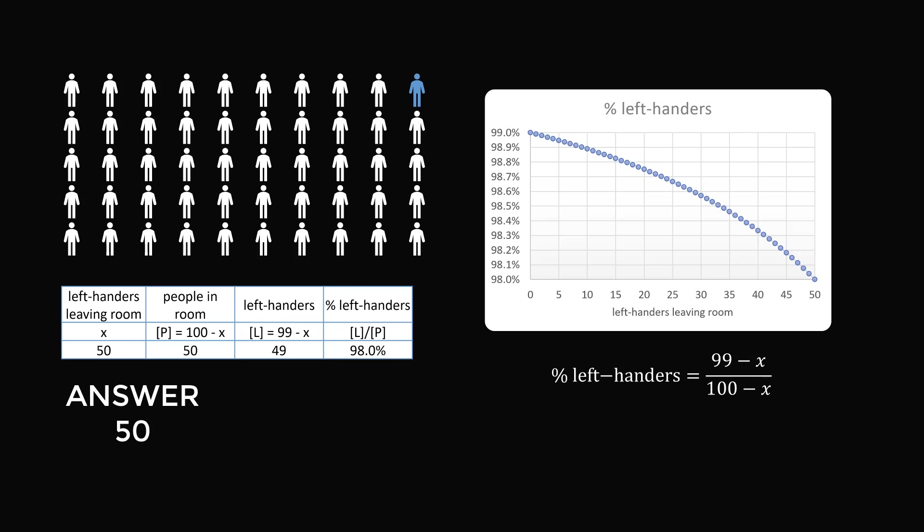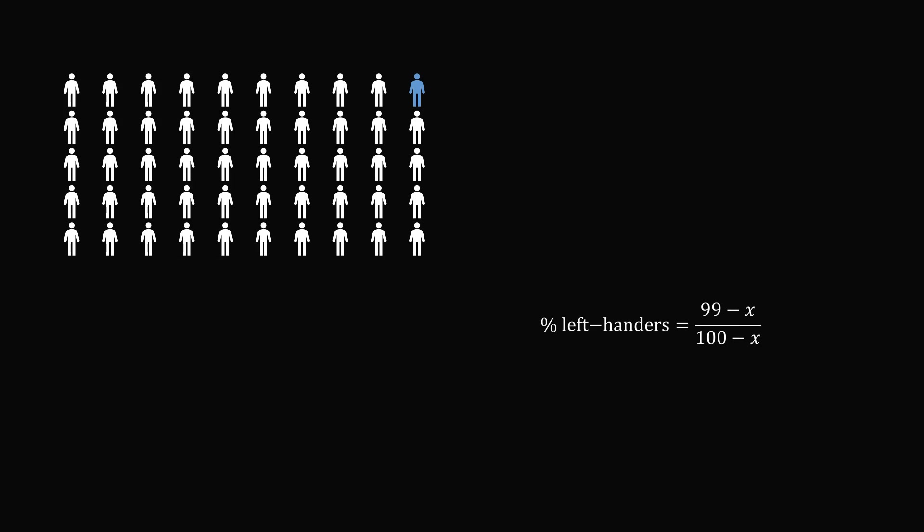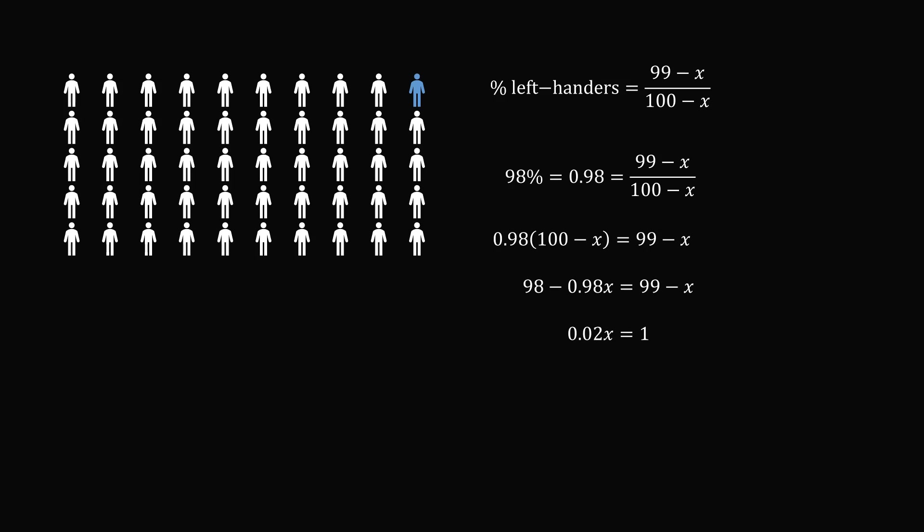Let's go ahead and just look at the formula. We need the percentage of left-handers to be 98%, and 98% is equal to 0.98. We can multiply both sides of this equation by 100 minus x. We then distribute 0.98. Now we will subtract 98 from both sides and add x to both sides. This gives 0.02x is equal to 1. So x is equal to 1 divided by 0.02, which equals 50. So once again we see we need 50 left-handers to leave the room.